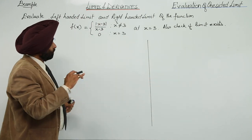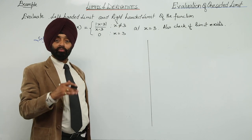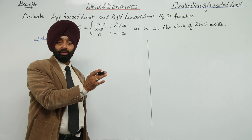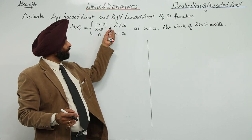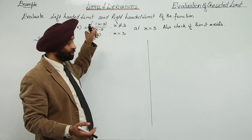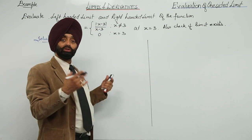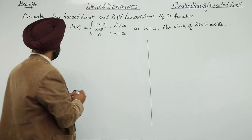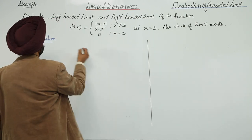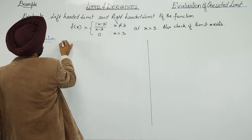When x is not equal to 3 — meaning when we evaluate the left-hand limit or the right-hand limit — we are going to use the upper part of the function in both cases. We are not going to use the value at x equals 3. First, evaluate the left-hand limit and right-hand limit.